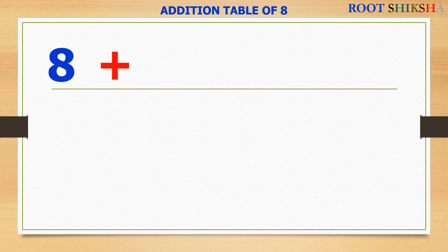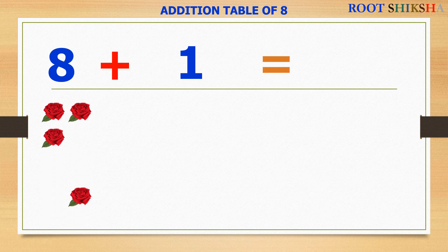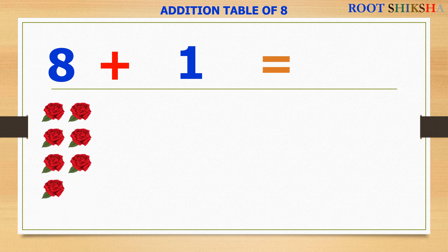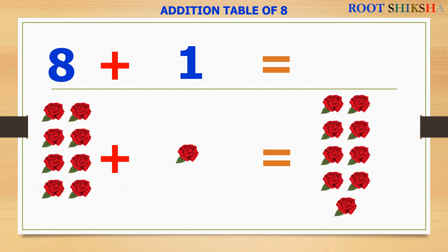8 plus 1 equals to — count with me: 1, 2, 3, 4, 5, 6, 7, 8. 8 roses plus 1 rose equals to — count with me: 1, 2, 3, 4, 5, 6, 7, 8, 9. 8 plus 1 equals to 9.